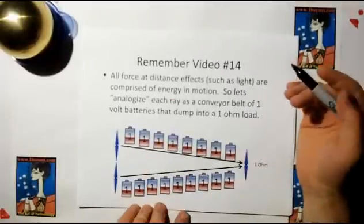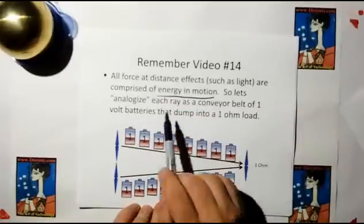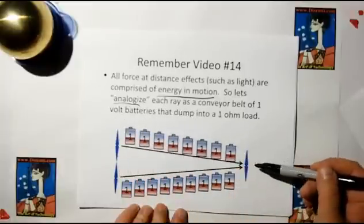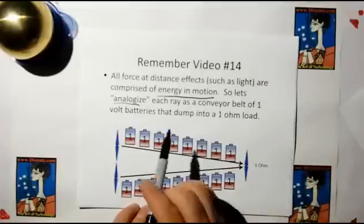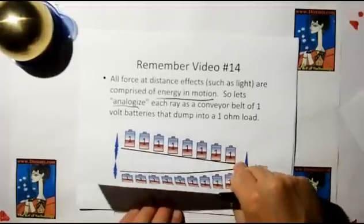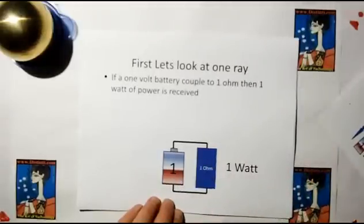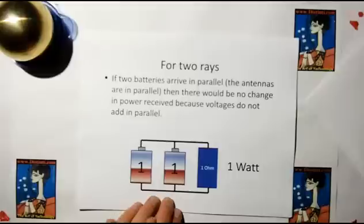If we remember video 14, we said that all force at distance effects such as light are comprised of energy and motion. So let's analogize each ray as a conveyor belt of one-volt batteries that dump into a one-ohm load. Let's say the receiver has one-ohm, just for the sake of analogy. And these batteries are moving along at a conveyor belt and they arrive in parallel because they're in phase. Before we look at the parallel, let's just look at one. If we have one-volt going into a one-ohm load, that'll give us one watt. Therefore, if we have two batteries arriving in parallel from the two different antennas, since voltages do not add in parallel, we still only have one watt of power into the load.